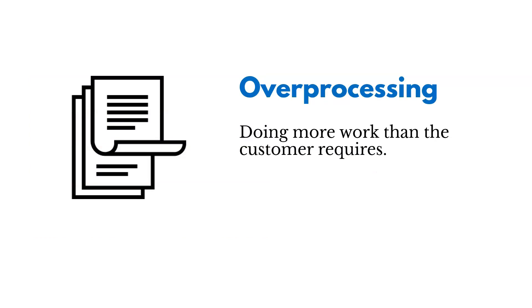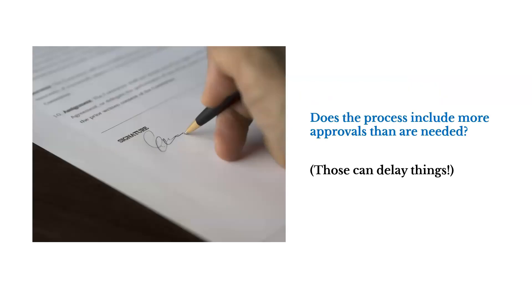Then there's the waste of overprocessing — doing more work than the customer actually requires. For example, does your process include more approvals than are needed? Those approvals can delay things. We should think about what steps we're performing that aren't really important to the customer and whether we can pull those out.